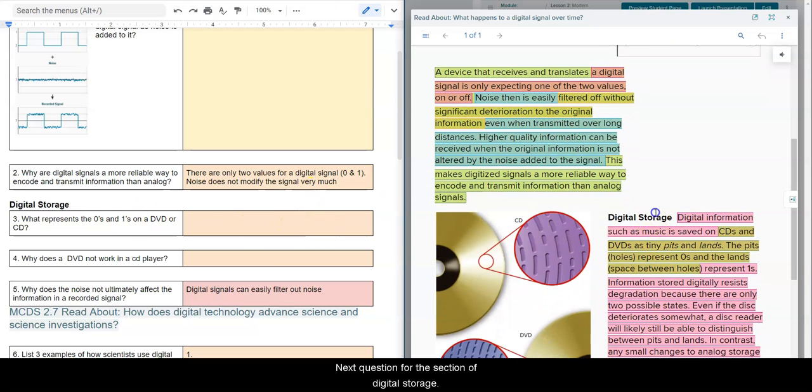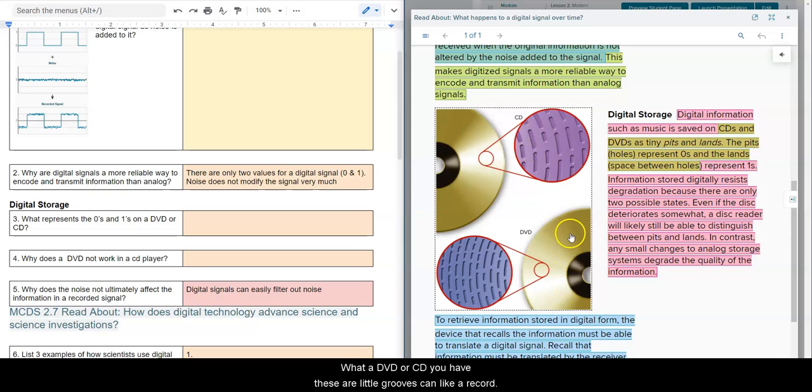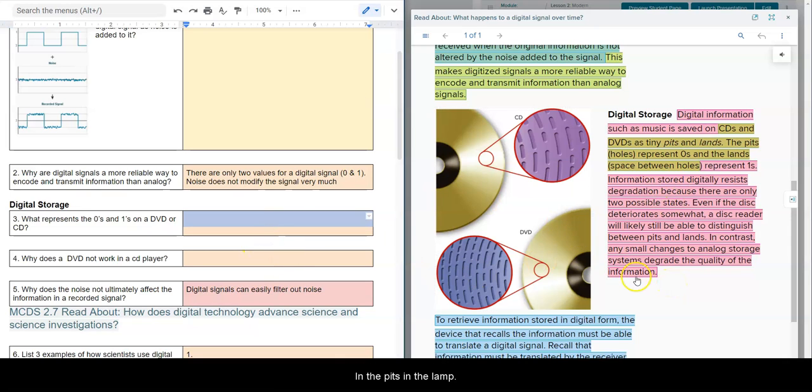So next question for the section of digital storage. What represents the 0s and 1s on a DVD or CD? So in a DVD or CD, you have these little grooves, kind of like a record. And the pits and lands, the 0s are the pits, so right here. And the lands are these little spaces in between the pits. So that determines what will be the 0s and 1s. Again, the pits and the lands.